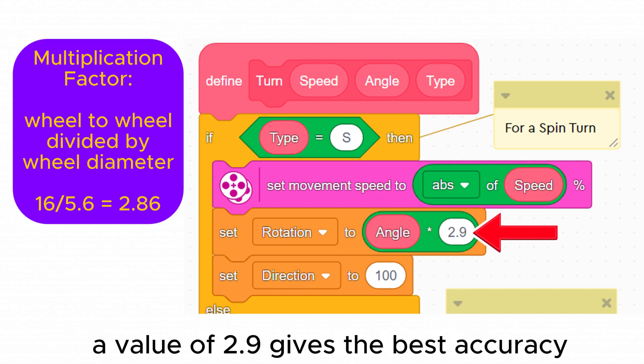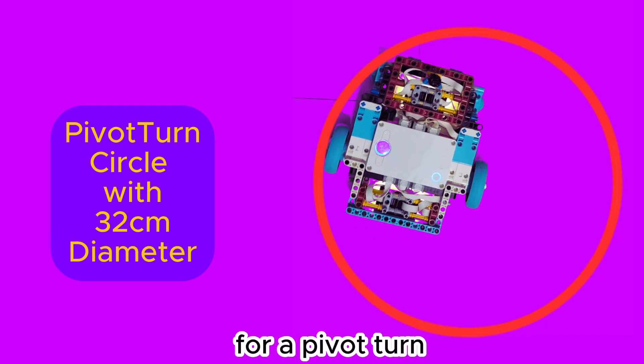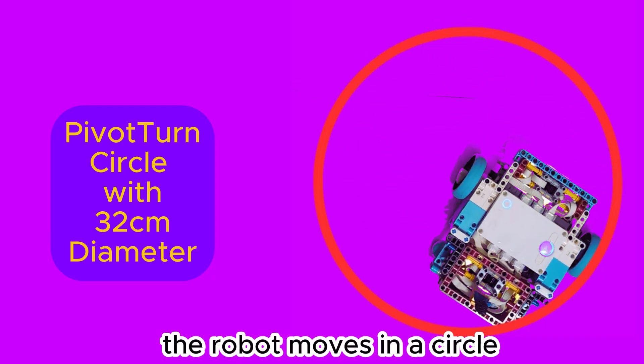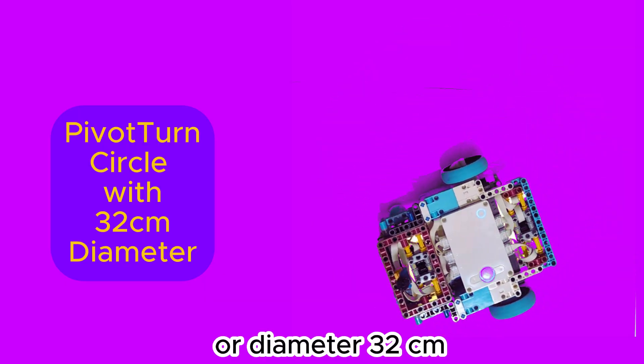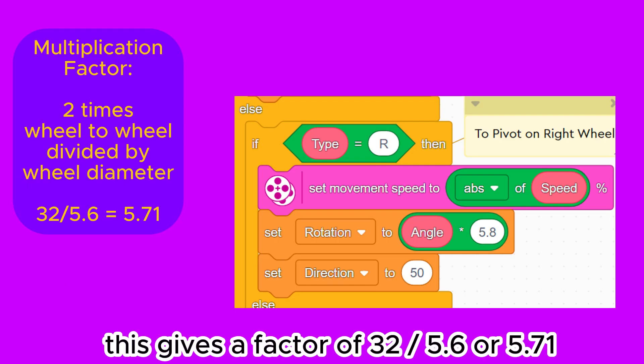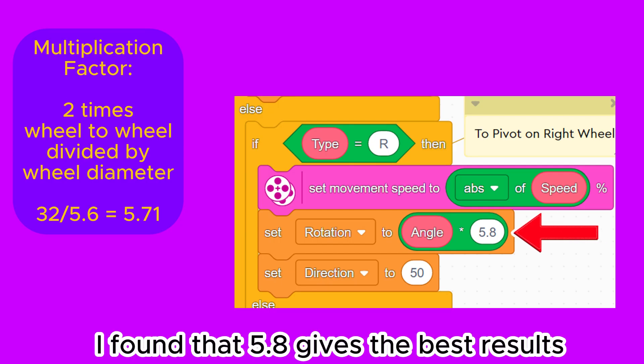I found in practice a value of 2.9 gives the best accuracy. For a pivot turn the robot moves in a circle with radius 16 centimeters or diameter 32 centimeters. This gives a factor of 32 divided by 5.6 or 5.71. I found that 5.8 gives the best results.